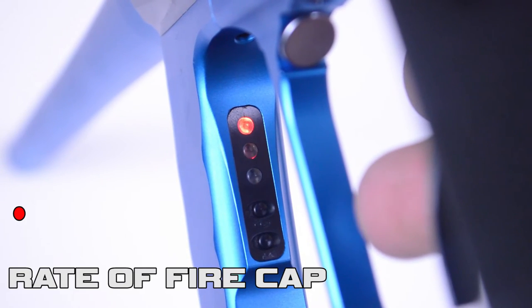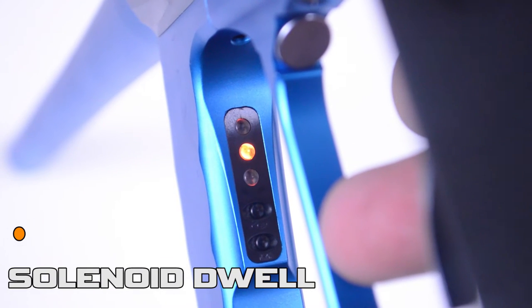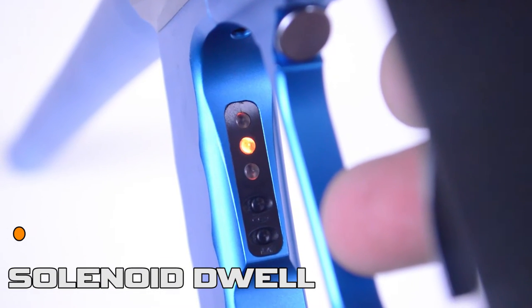A single red shows your rate of fire cap. By pressing and releasing the trigger once, you'll cycle through the modes, and the next mode is the yellow LED light for solenoid dwell.